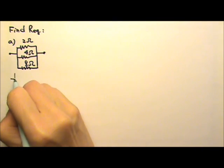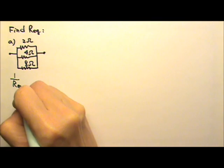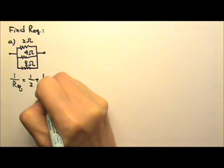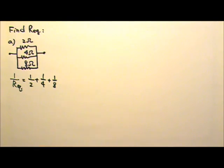They are in parallel, so the equation is the 1 over equation. 1 over equivalent resistance equals 1 over R1 plus 1 over R2 plus 1 over R3.